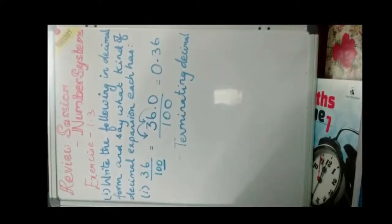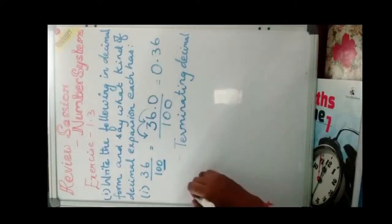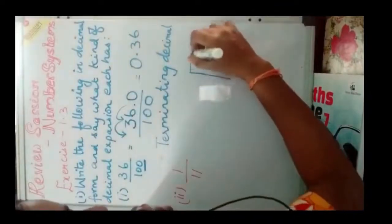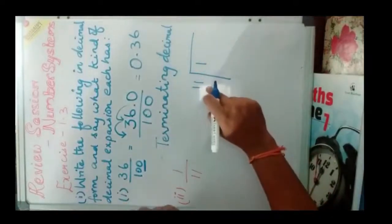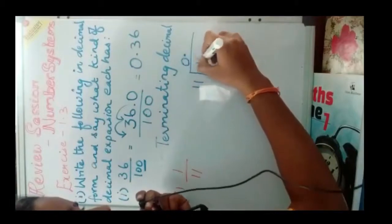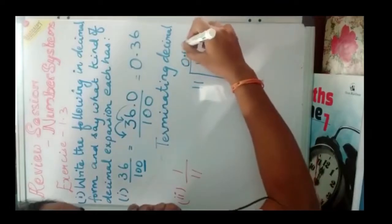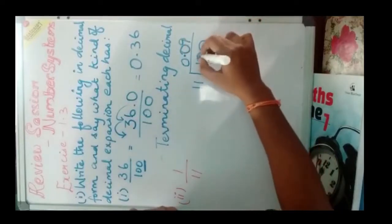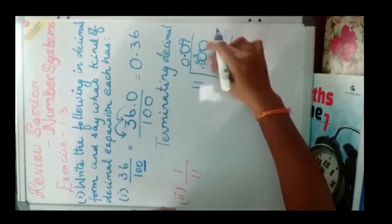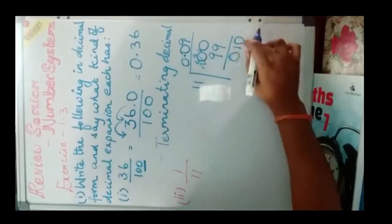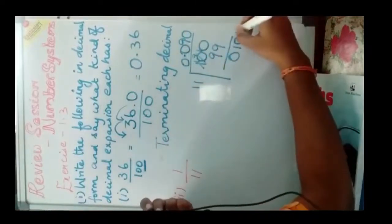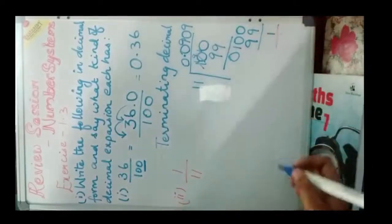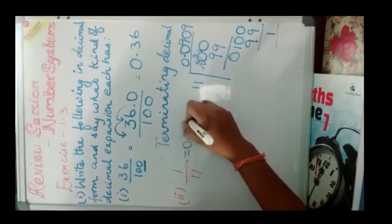Now the second sum: 1 by 11. This can be done by simple division. Here 1 is smaller than 11, so I put a decimal point and add 0. 10 will not go into 11, so I add another 0, making it 100. 11 nines are 99; subtracting gives remainder 1. Then I add 0 again — 10 won't go into 11, so add another 0. Again it goes by 9 giving 99, remainder 1. So the answer is 0.0909 and so on.